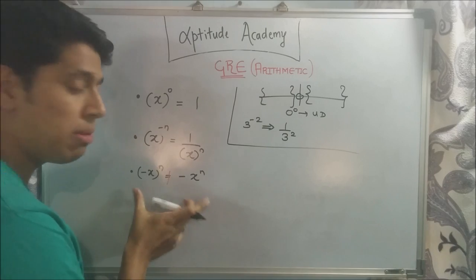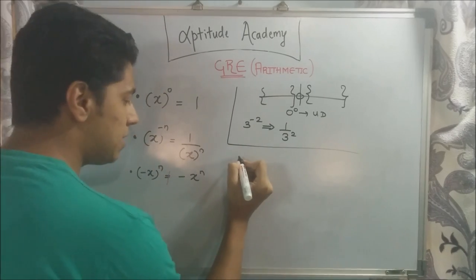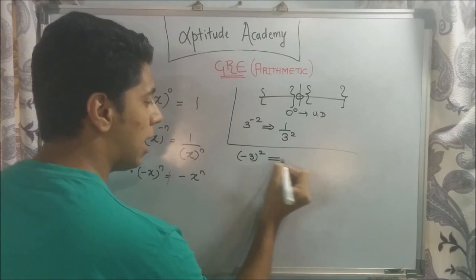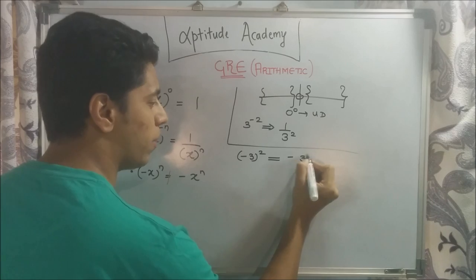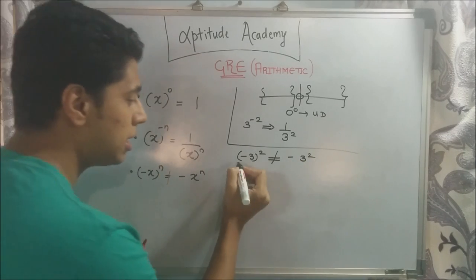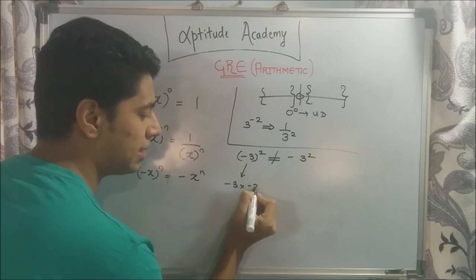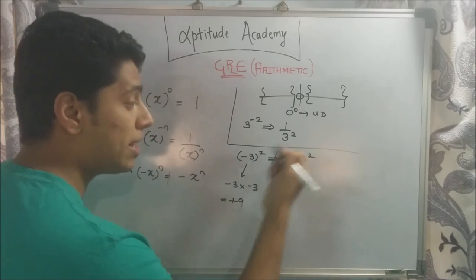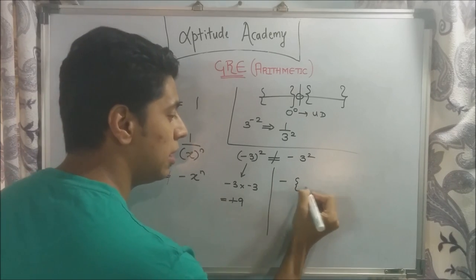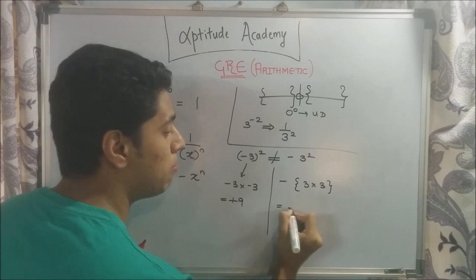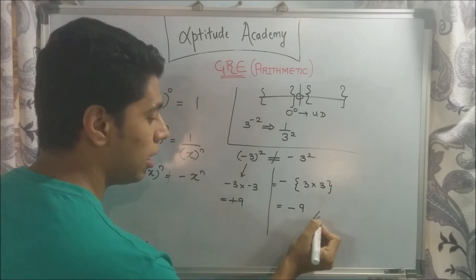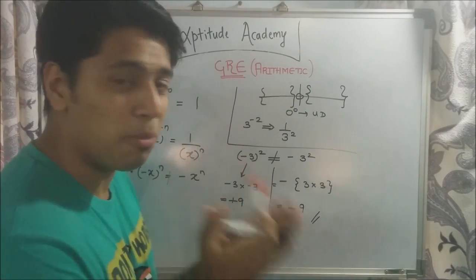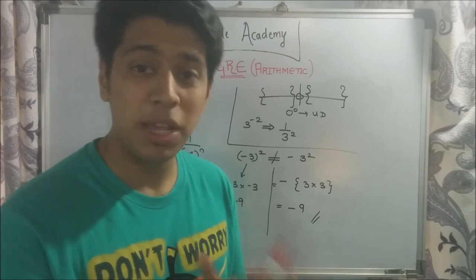The third one is a very common mistake that most of us make on the GRE. Minus 3 squared and minus of 3 squared are not equivalent. If you calculate minus 3 squared, it's minus 3 into minus 3; minus into minus is plus, 3 into 3 is 9, so plus 9. Whereas minus of 3 squared is minus 9. Completely different. So this is a very commonly made mistake on the GRE — make sure you don't do this.